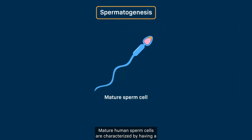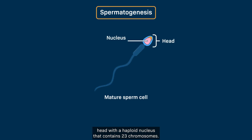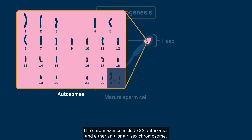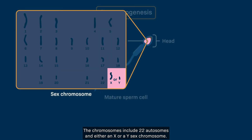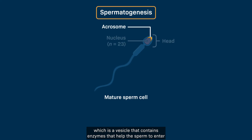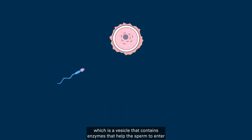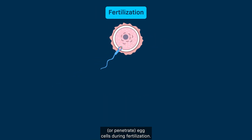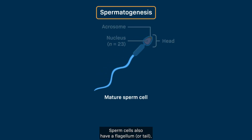Mature human sperm cells are characterized by having a head with a haploid nucleus that contains 23 chromosomes. The chromosomes include 22 autosomes and either an X or a Y sex chromosome. The tip of the sperm cell has an acrosome, which is a vesicle containing enzymes that help the sperm to penetrate egg cells during fertilization. Sperm cells also have a flagellum, or tail, which facilitates movement toward the egg to fertilize it.